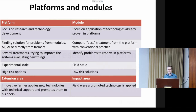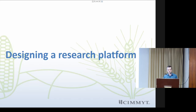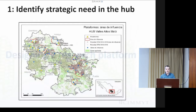That's the theory, but how do we get to practice? Our research platform is not just a trial where a scientist thinks of new research and puts it in the field — there's more to it. First, we need to have a strategic need in the hub for a platform. For example, there can be areas where we're working in a system we don't know, or where the nearest platform is too far for local farmers to visit. Then the hub manager will indicate that we need a platform there.